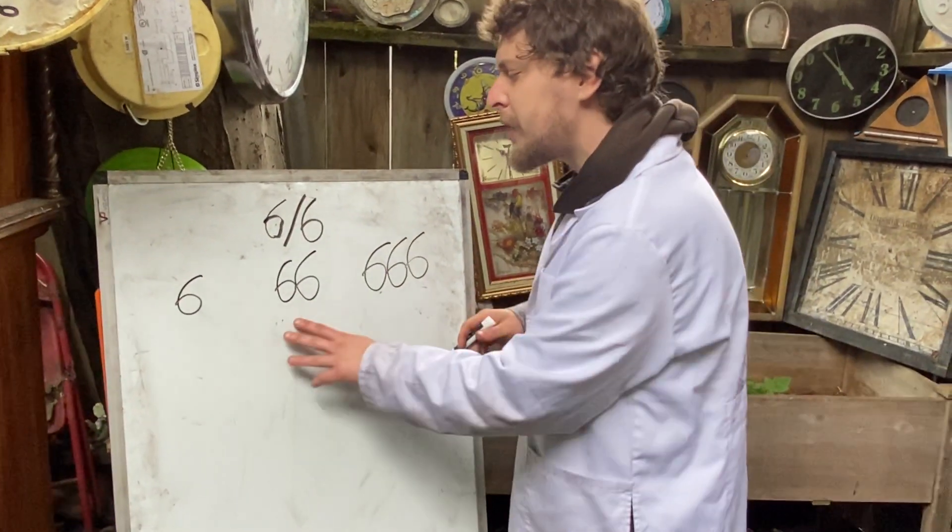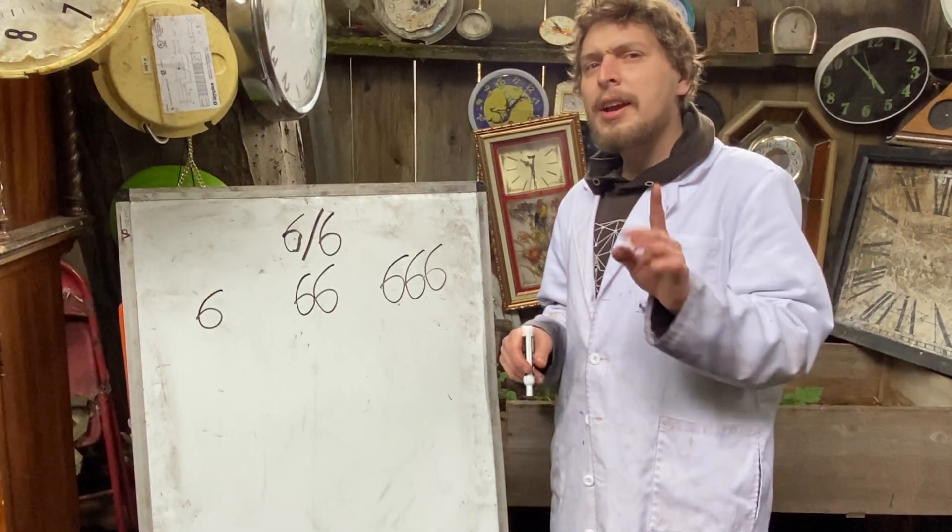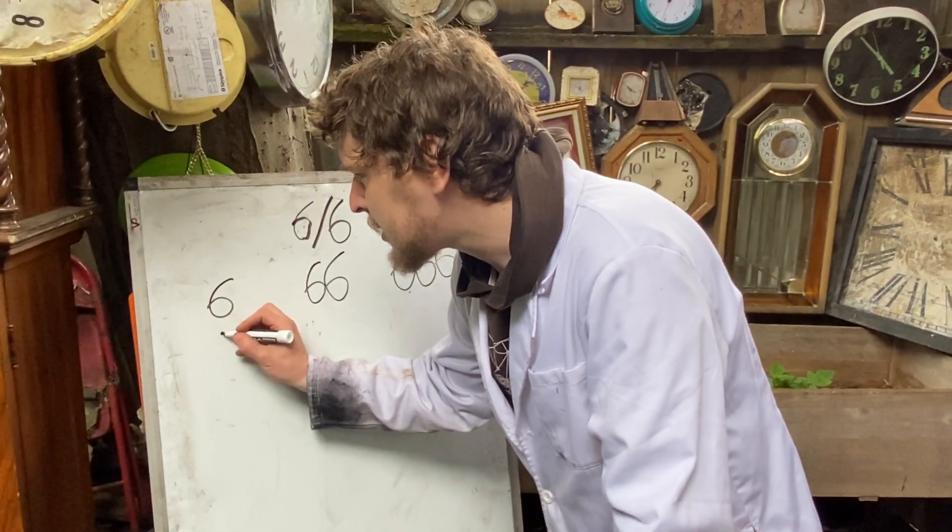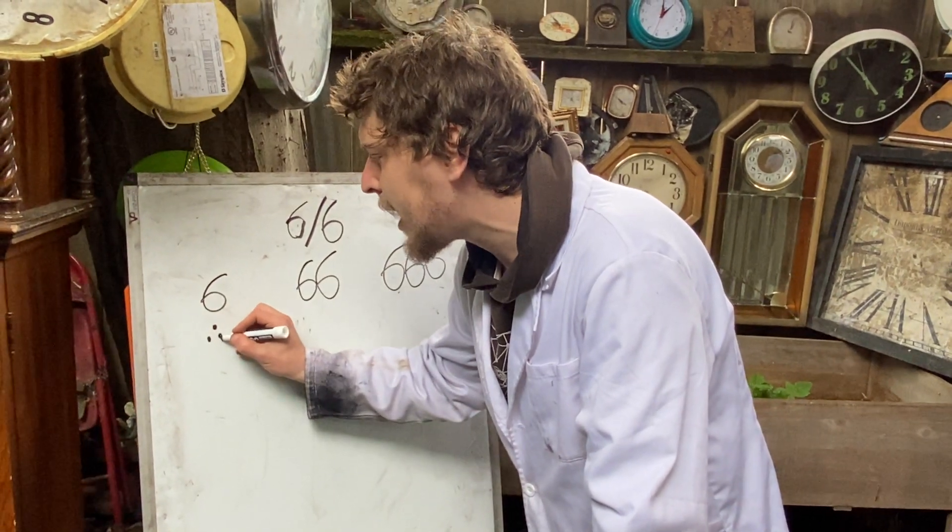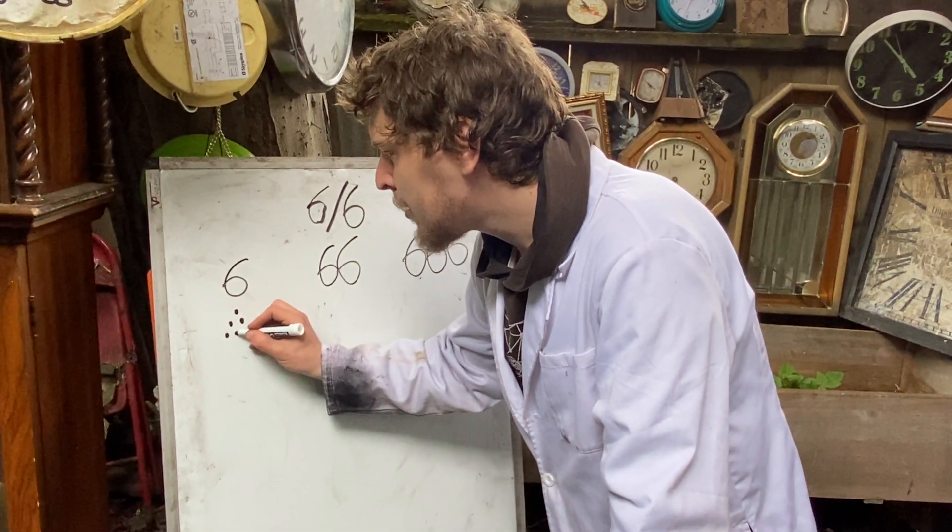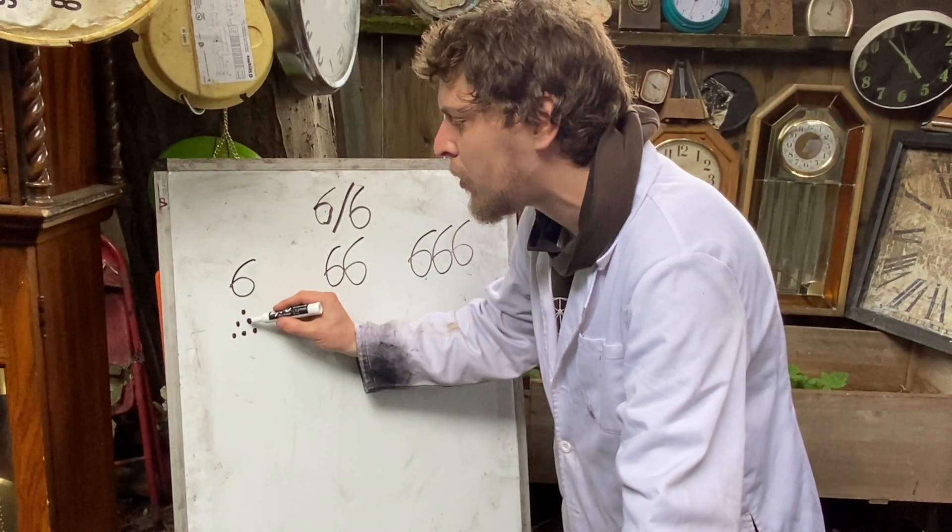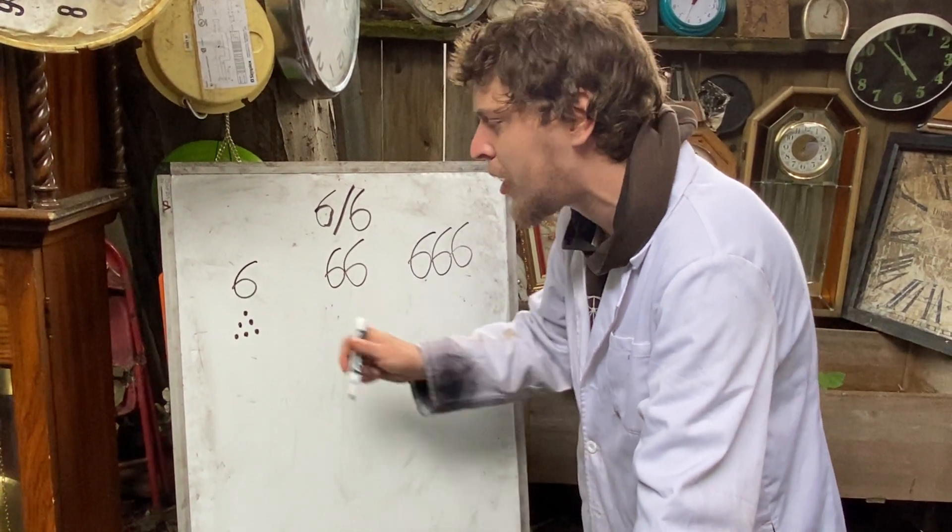All three of these numbers can form triangles in some interesting ways. Six is known as a triangular number because if I make a triangle of dots with one more in each part, one dot.